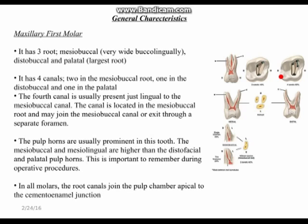The fourth canal, located in the mesiobuccal root, may join the mesiobuccal canal or exit through a separate foramen on the same root. The pulp horns in this tooth are usually prominent, which is important to know for restorative procedures so we can take caution and avoid any pulp exposure or going into the chamber.